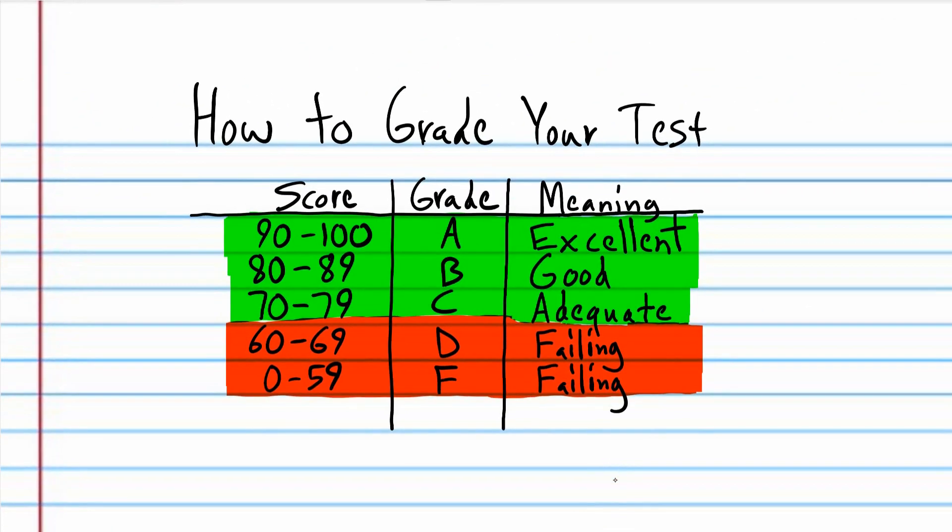If you scored 90 to 100, then in the United States, you would be given typically a grade of A, which means excellent. 80 to 89 is a B. That means a good job. If you scored 70 to 79, that means it's adequate. It means it's okay. If you got a 70 to 100, that basically means you have nothing to worry about. All right? But if you scored any lower than a 70, then that means that there's a problem. That means you're not really demonstrating that you know enough.